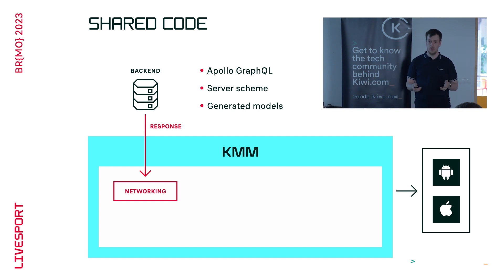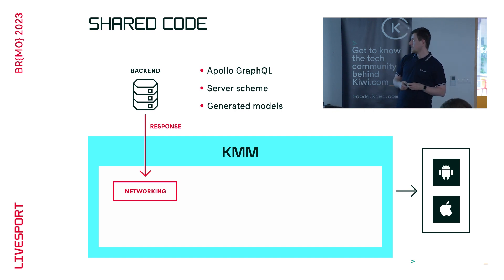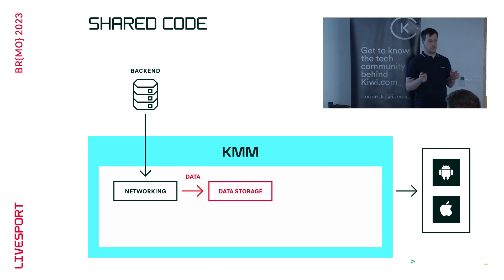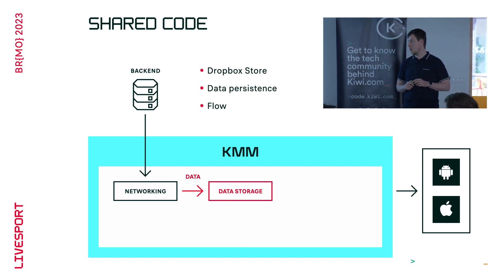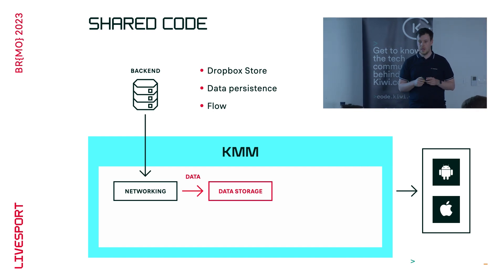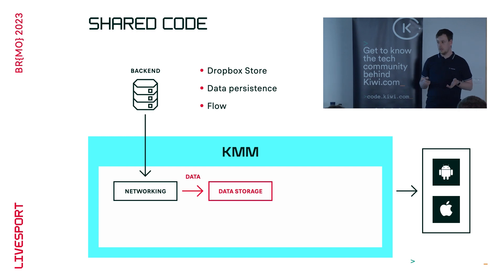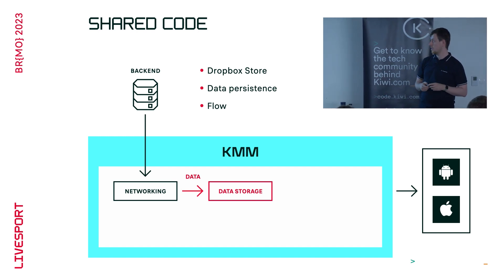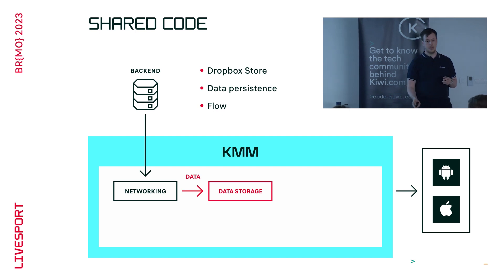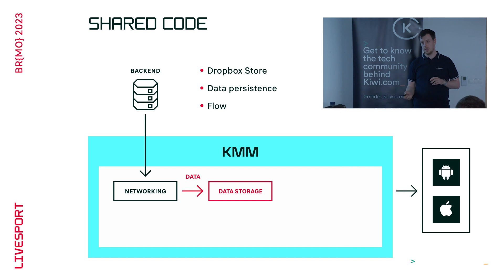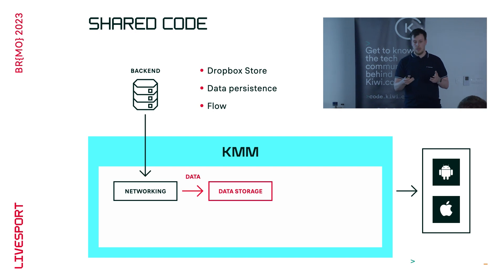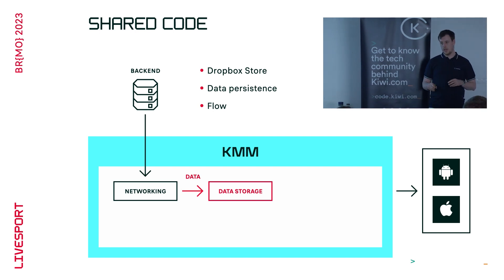You generate all your backend models and, as I said, write it once and use it twice. For data storage we use a library called Dropbox Store. This library does two things: it caches data so we don't make too many requests to our backend, and if data isn't in the cache it redirects the request to the networking layer.